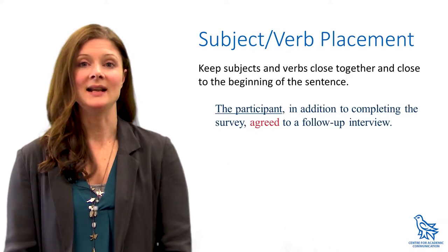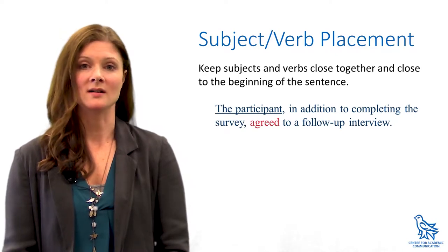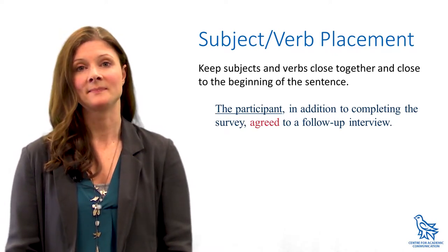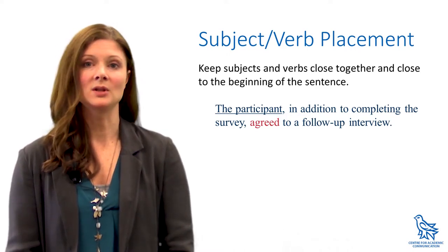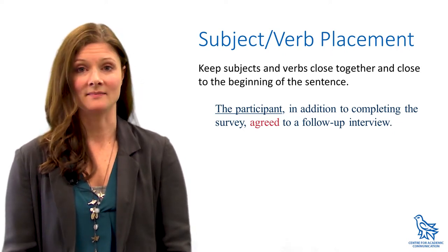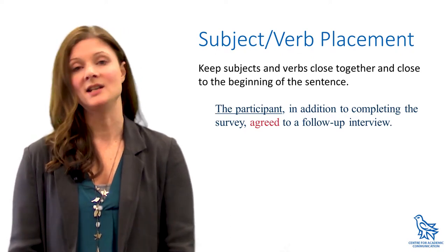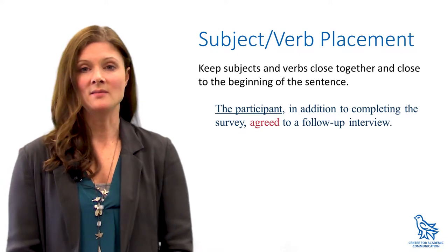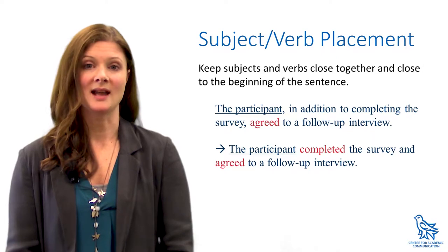Next, the most common and easily read sentence structure in English is the subject-verb-object order, with the subject and verb close together and at the beginning of the sentence. If your sentences are starting to get out of hand, find the verb and its subject, put them close together and put them as near the beginning of the sentence as you can. For example, instead of writing "the participants, in addition to completing the survey, agreed to a follow-up interview," find the main verb — in this case, "agreed" — and put words or concepts that are alike close together.